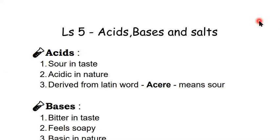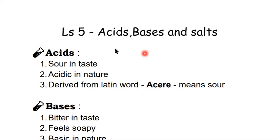Hello everyone, welcome back to my channel WizArtist. In this video, I'll explain lesson number five: acids, bases, and salts. This is the chapter of NCERT Science, class seven. In this chapter, we learn about acids, bases, and how salts are formed through the process of neutralization. We also learn about various indicators and neutralization in daily lives.